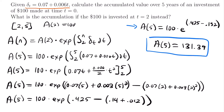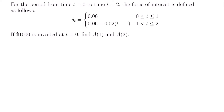So $131.39 is the answer when the initial investment is made at t = 2 rather than t = 0. The only thing that changed were the bounds of integration. Now let's look at one more example. For the period from t = 0 to t = 2, the force of interest is a piecewise function. We need to find the accumulation at time 1 and at time 2 when $1,000 is invested at t = 0.